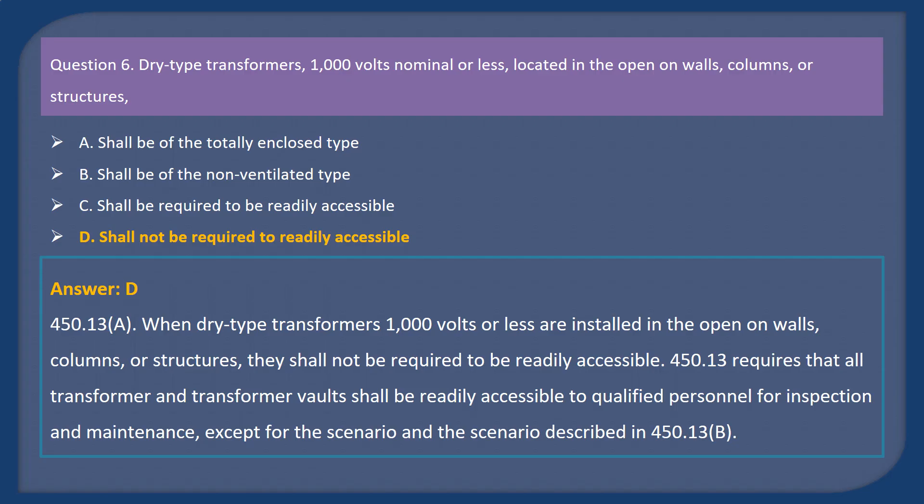Answer: D. Explanation. 450.13A. When dry type transformers 1,000 volts or less are installed in the open on walls, columns, or structures, they shall not be required to be readily accessible. 450.13 requires that all transformers and transformer vaults shall be readily accessible to qualified personnel for inspection and maintenance, except for the scenarios described in 450.13B.